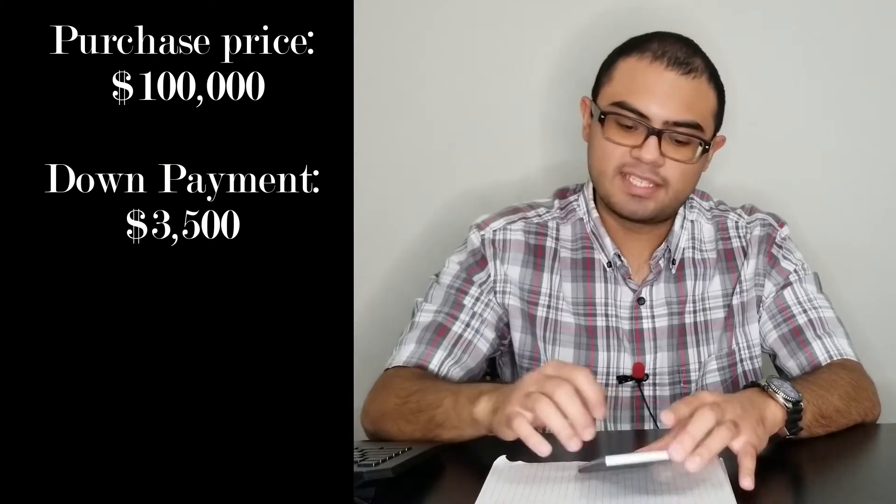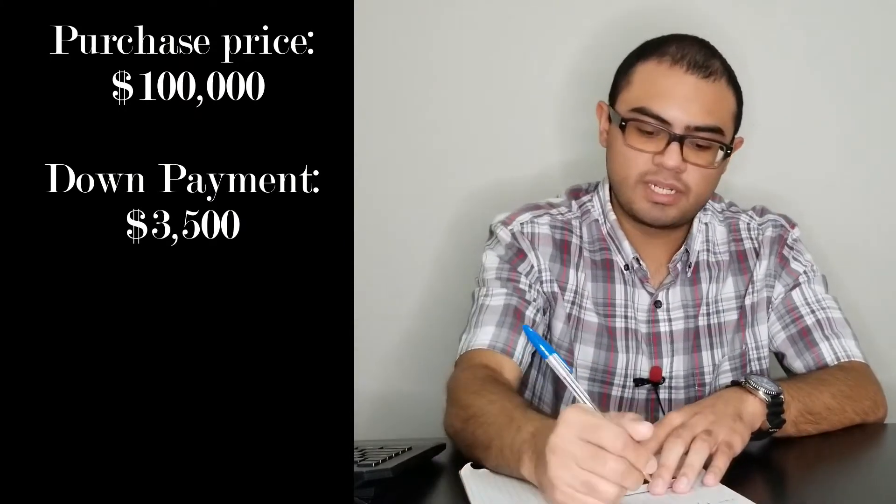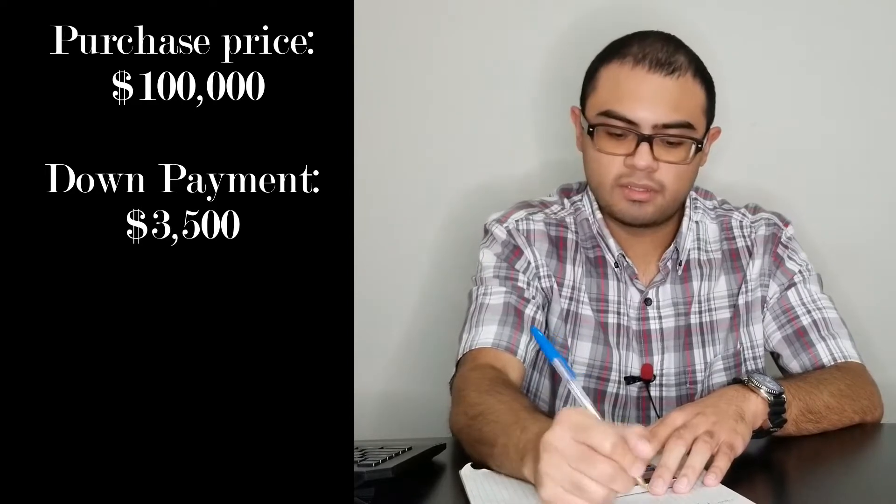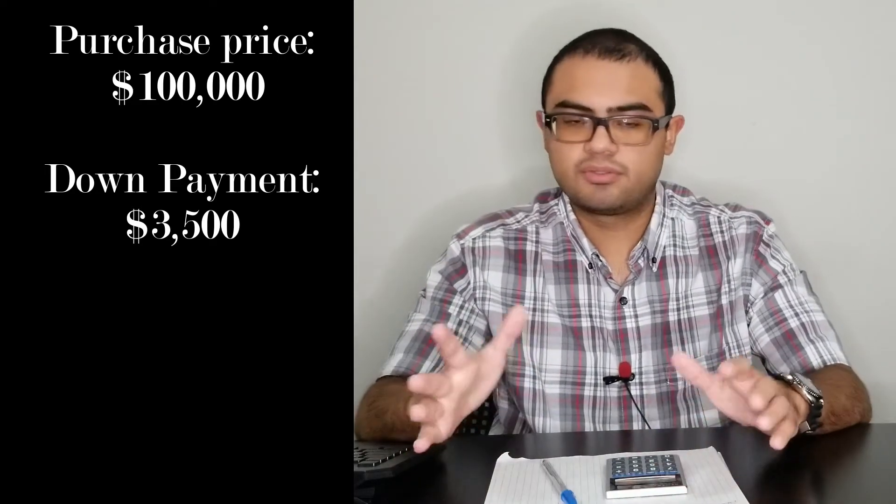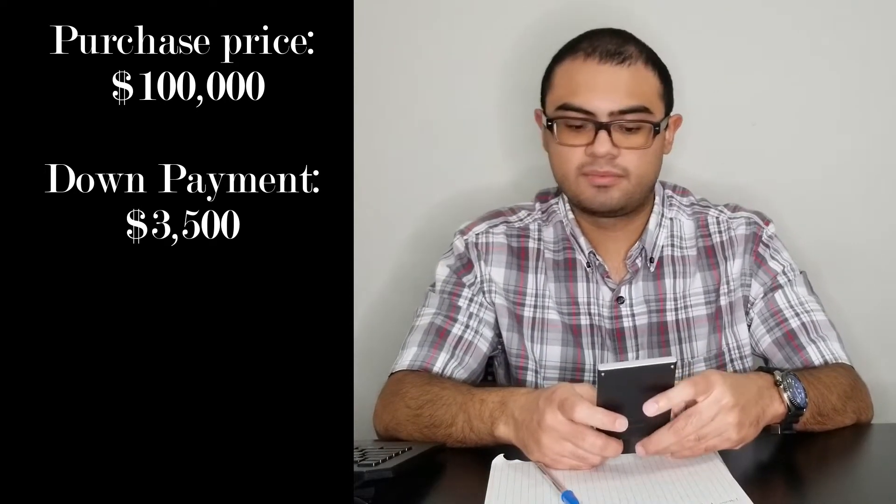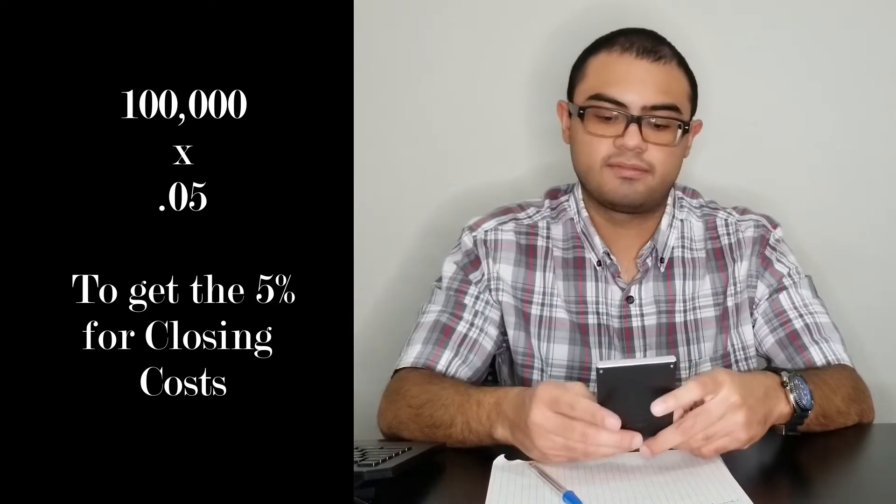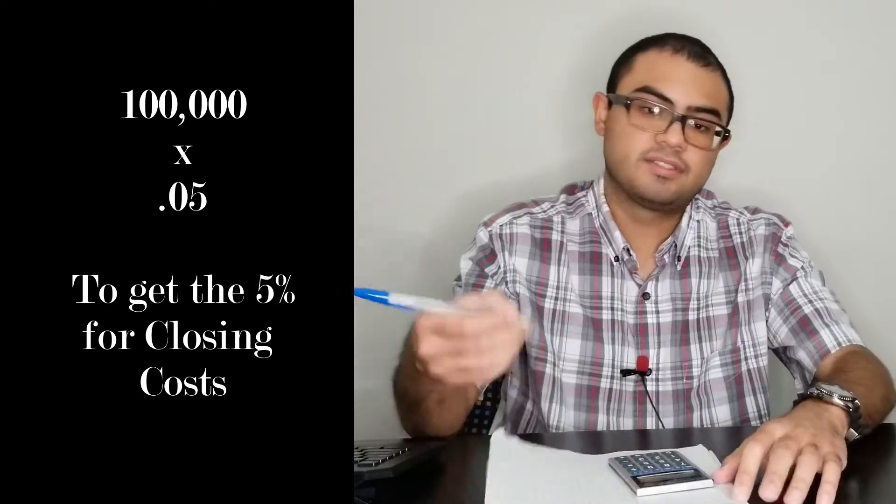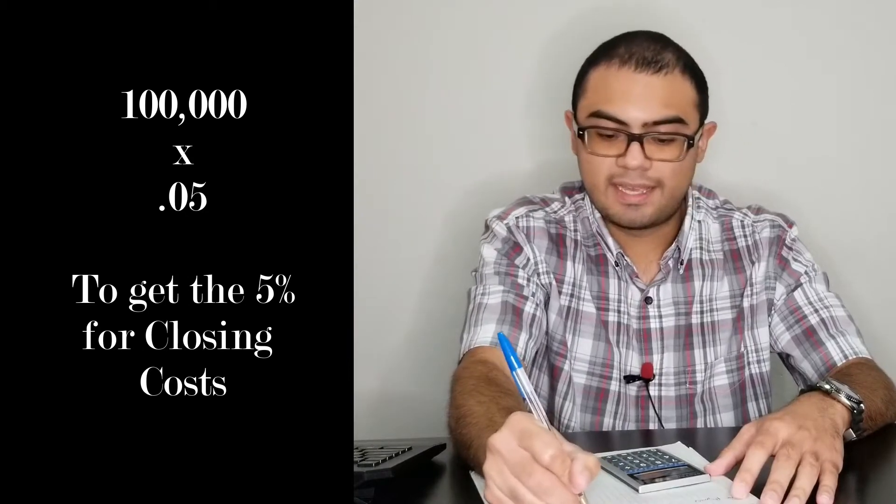At minimum, you need to have at least that. That should be your first goal. Now say you need to have an additional 5% for closing costs. On that same deal, we're already at $3,500 for the down payment. Now say you need an additional 5% for closing costs, we're going to go back to that original number, $100,000, multiply that by 0.05.